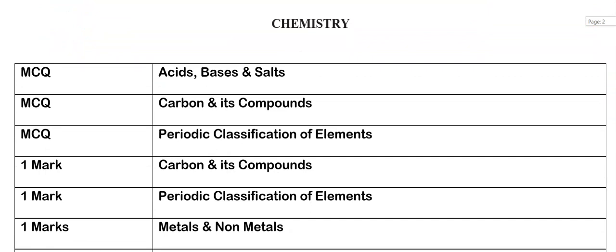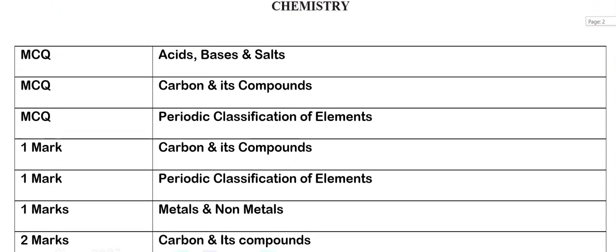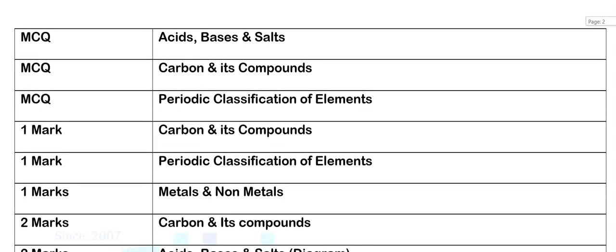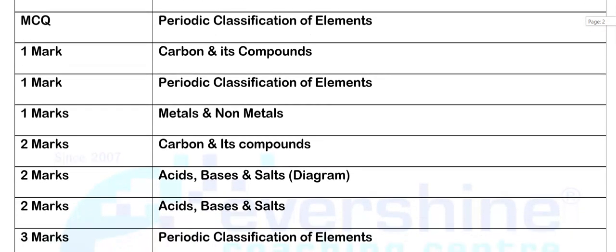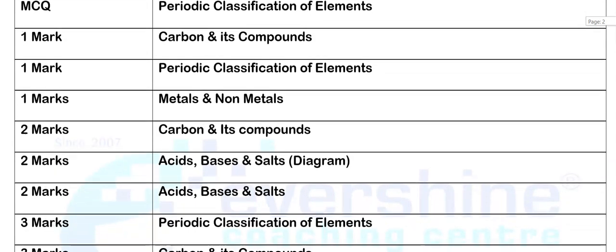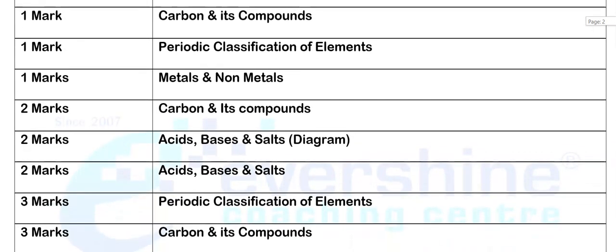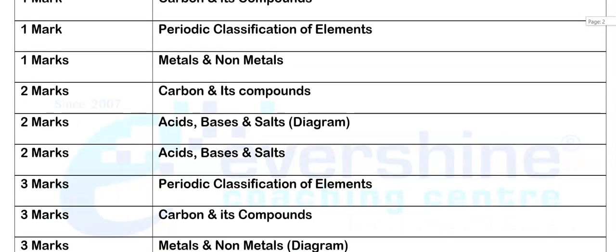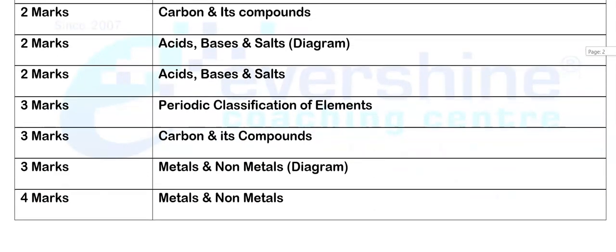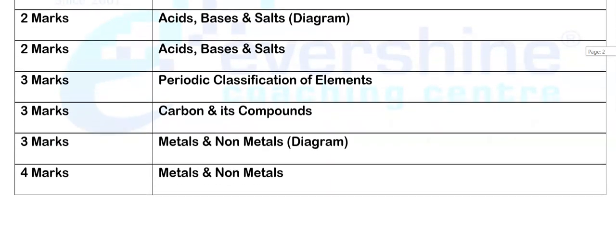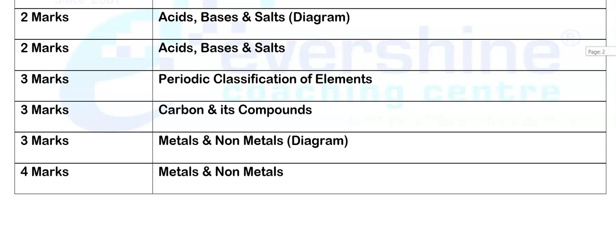Similarly we can see the chemistry MCQ questions: the first MCQ is from acid bases and salts, the next MCQ from carbon, and the third MCQ from periodic classification. The 1-mark question is from carbon, again 1-mark from periodic classification, and another 1-mark from metals and non-metals. The 2-mark is from carbon, next from acid bases and salts — with a diagram asked for 2 marks — and another 2-mark also from acid bases and salts. The 3-mark is from periodic classification of elements, the next 3-mark from carbon and its compounds, and then a 3-mark diagram from metals and non-metals. The 4-mark theory question is from metals and non-metals.